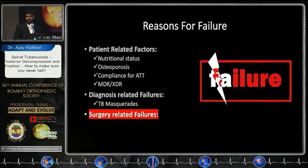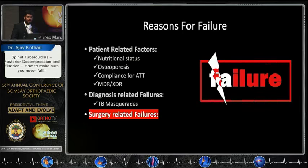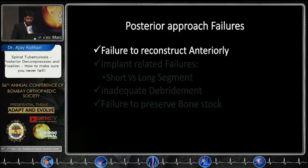The reasons for failure are mainly patient-related factors. Nutritional status must be assessed, as TB patients are often cachectic and malnourished with low protein levels. Osteoporosis of the bone is also an important factor contributing to implant failure. Compliance with anti-tubercular treatment, MDR and XDR TB, and misdiagnosis — where the infection is treated as TB but turns out to be something else — are all further causes of failure, along with surgery-related complications.